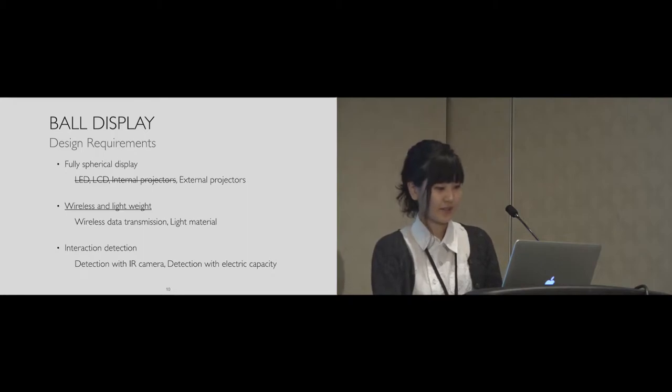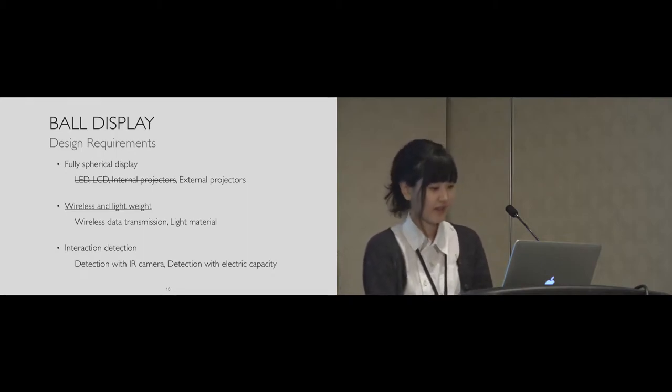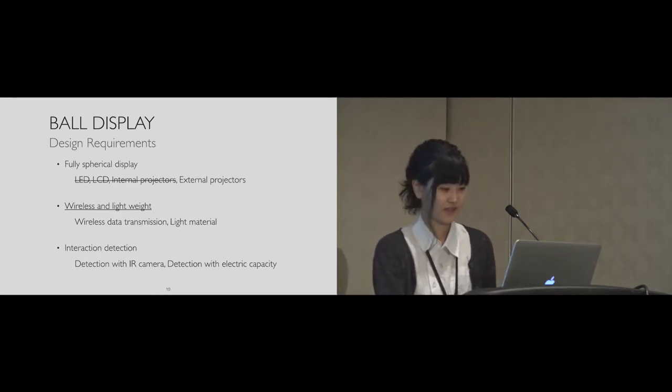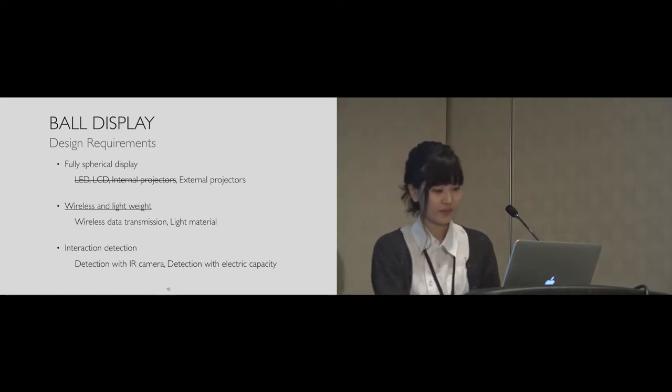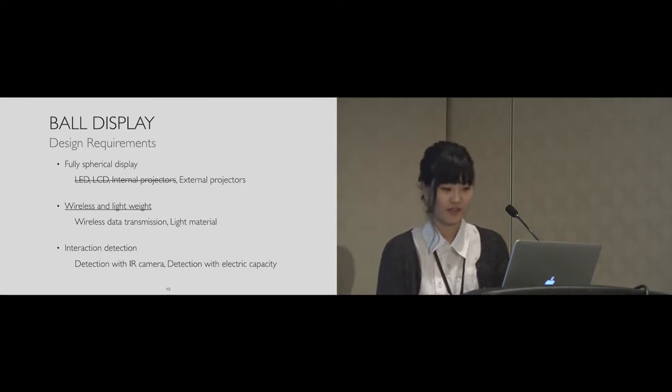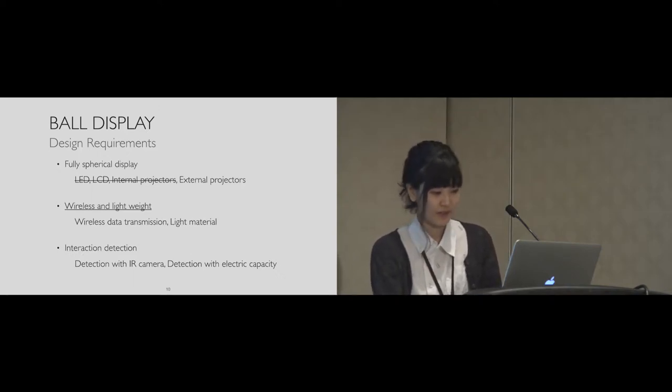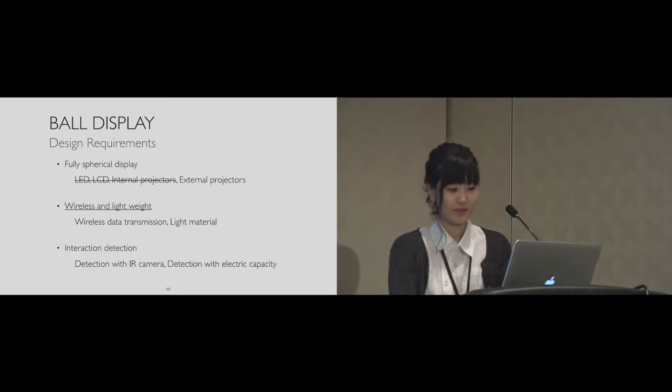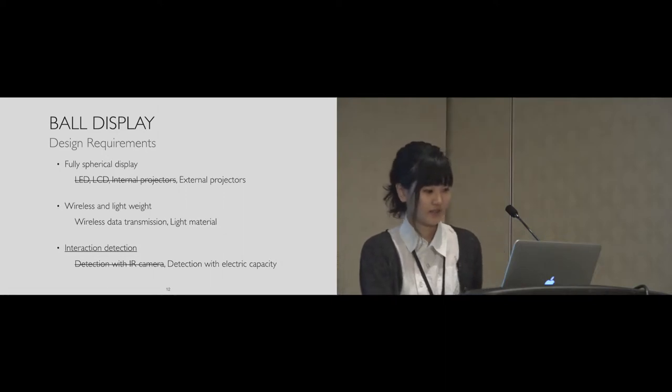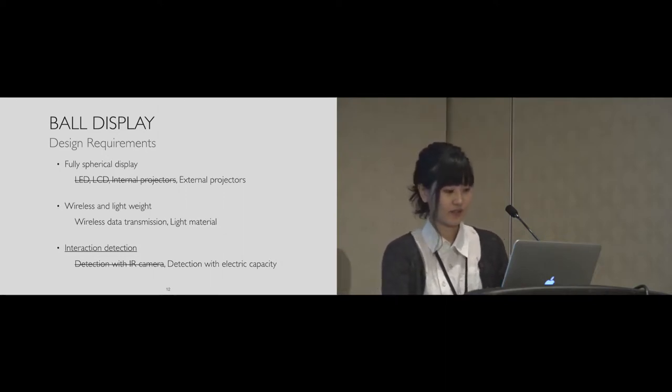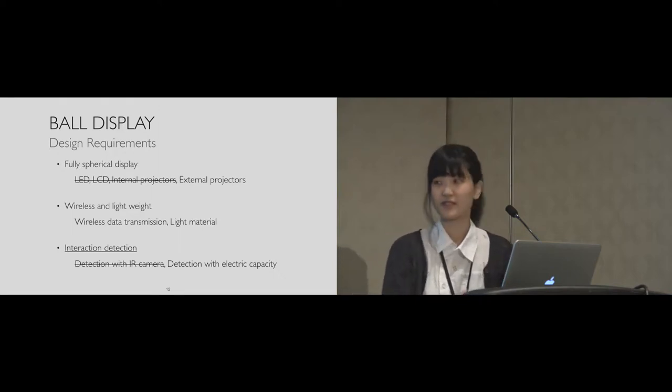And the second requirement is wireless and lightweight. In order to utilize the features of a ball in interaction, capabilities of being handled in user's hand and being rotated are essential. To meet these demands, this display must be lightweight, impact resistant, and wireless. So we use wireless communications to send the ball device data, and as the body of the display, we use light ball-shaped material. Furthermore, in order to be able to perform touch, IR camera may be used in the display, but in this system to satisfy the lightweight requirement, we use electrostatic capacitance on the surface of the device.